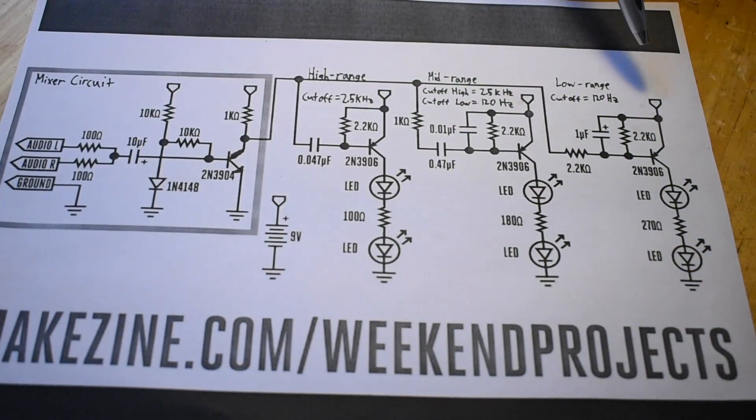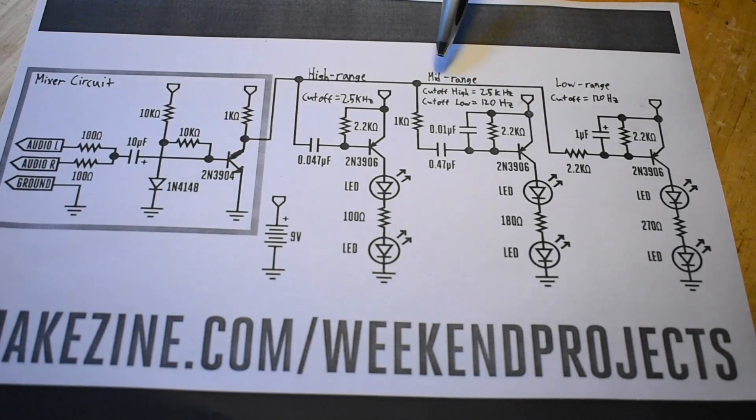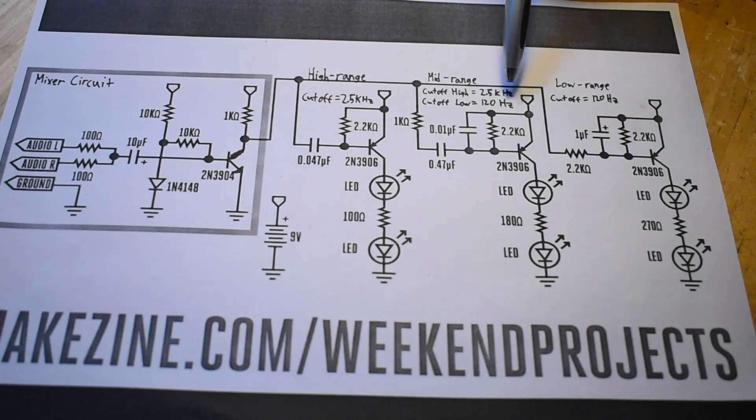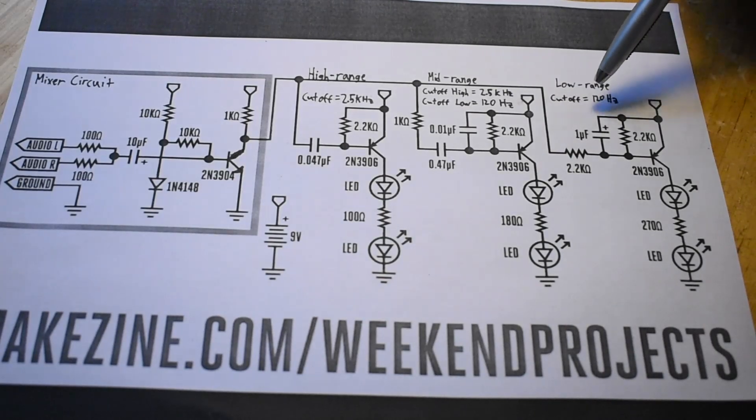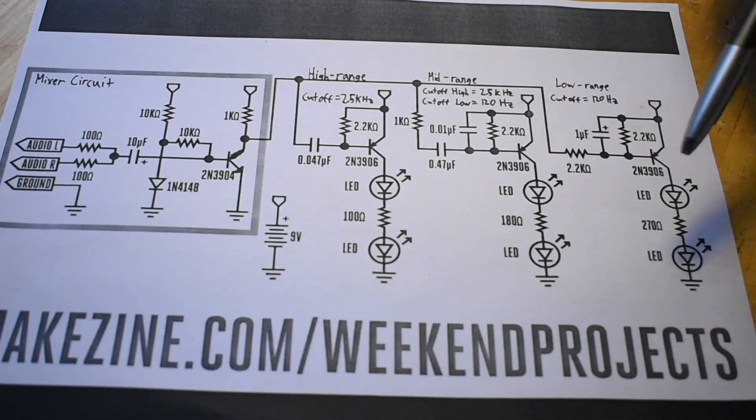This is true for the other filters as well. For the mid range, the cutoff is between these two numbers, 2.5 kHz and 120 Hz. And for the low range, anything below 120 Hz is allowed to pass.